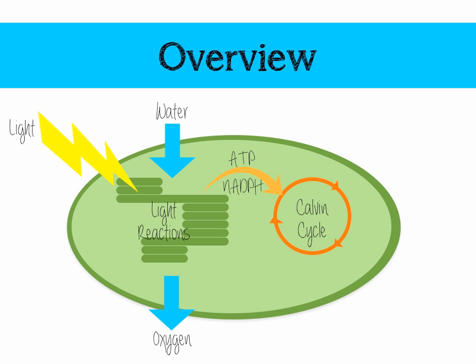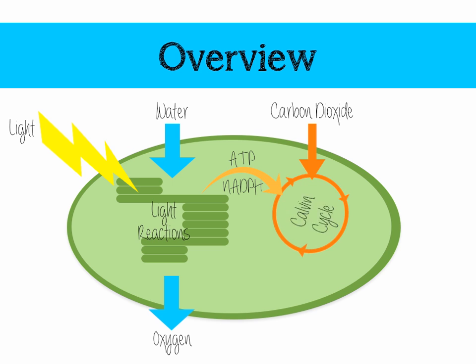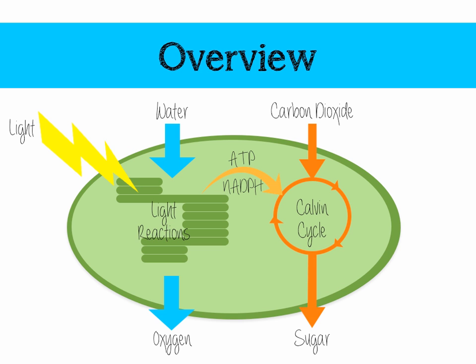The main part of the light-independent reaction is the Calvin cycle, named for Melvin Calvin who sequenced the compounds. For this we need carbon dioxide, plus the ATP and NADPH from the light-dependent reactions. The Calvin cycle produces useful stuff, including sugar. It also produces ADP and NADP, which whizz back to the light-dependent reactions to allow those to continue — so both sides help each other.